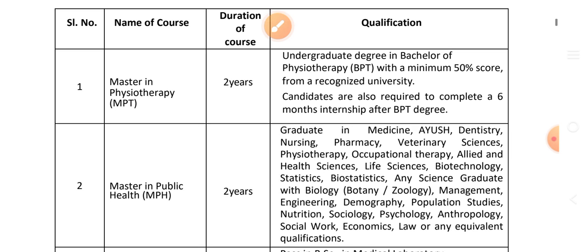Master in Public Health, MPH. Duration: two years. Eligibility includes graduates in Medicine, Dentistry, Nursing, Pharmacy, Veterinary Science, Physiotherapy, Occupational Therapy, Health Science, Life Science, Biotechnology, Statistics, Bioethics, and NE Science.